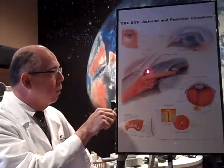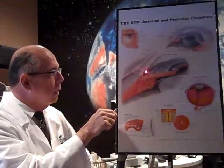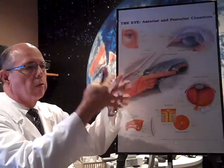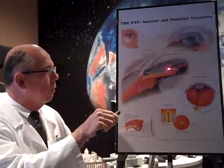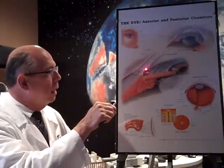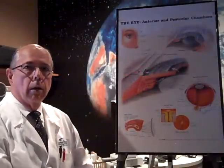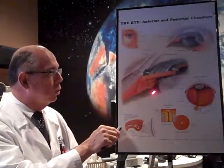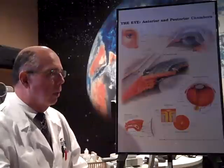The white part is called the sclera, and right in this area there's a meshwork. This looks like cheesecloth — there are little fibers going back and forth. The fluid filters through this cheesecloth into Schlemm's canal, and then eventually into a vein and out of your eye. So there's a constant production of fluid in your eye and a constant outflow of fluid from your eye.